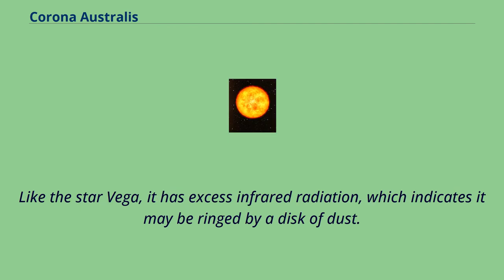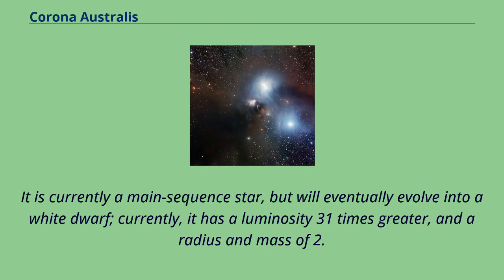Like the star Vega, Alfeca Meridiana has excess infrared radiation, which indicates it may be ringed by a disk of dust. It is currently a main sequence star, but will eventually evolve into a white dwarf. It has a luminosity 31 times greater, and a radius and mass of 2.3 times that of the Sun.